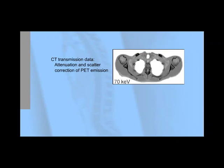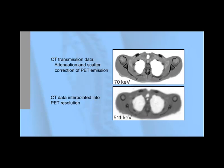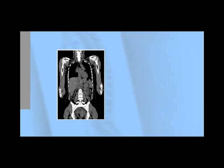The CT transmission data are used for attenuation and scatter correction of the PET emission data. In order for the CT to accurately process attenuation correction, the CT data must be first interpolated into the PET resolution. For whole body scans,